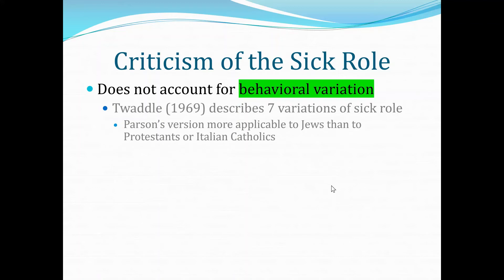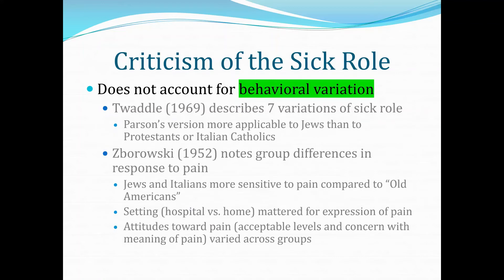Parsons' version is more applicable to Jews than to Protestants or Italian Catholics, for example. Borowski notes group differences in response to pain — Jews and Italians are more sensitive to pain compared to old Americans. Setting also matters for expression of pain, like hospital versus home, and attitudes towards pain vary across groups.